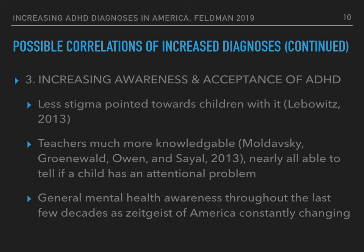Thirdly, there are probably many more correlating factors such as genetics and environment, but we decided to focus on these three possible correlations due to the information available in scientific journals. Our third and last possible correlation is the increased awareness and acceptance of ADHD. There is less stigma pointed towards children with it, and teachers are now much more knowledgeable about the condition — a study in 2013 showing that nearly all were able to tell if a child had an attentional problem. There is also a general mental health awareness throughout the last few decades, as the zeitgeist towards mental health disorders in America has been changing.